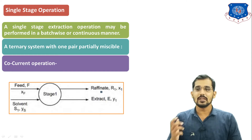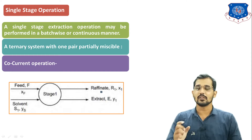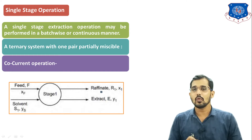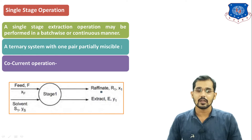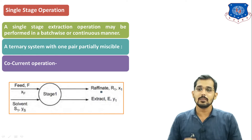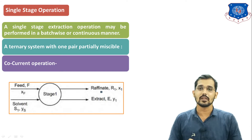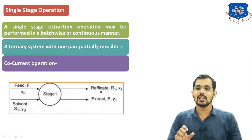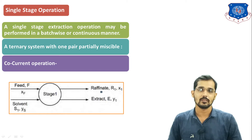Now we will see co-current operation. Co-current operation means the feed to be extracted and the extracting solvent come from the same direction. If the feed to be extracted and the solvent come from opposite directions, that is counter-current operation.